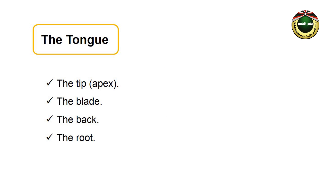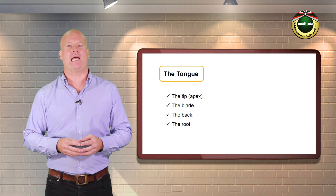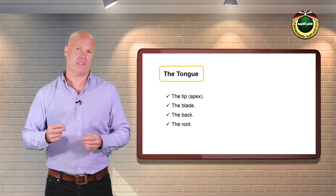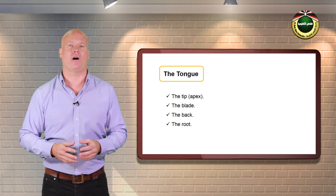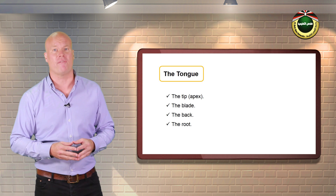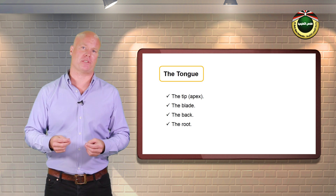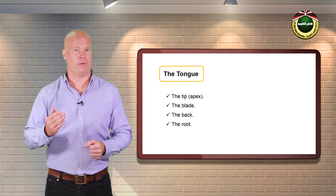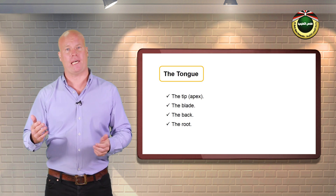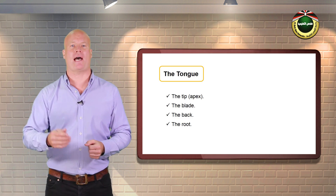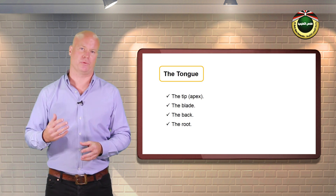The tongue is the most active articulator. It is a very important speech organ, and it is the only articulator involved in producing vowel sounds. It is divided into parts: the tip, the blade, the back, and the root.